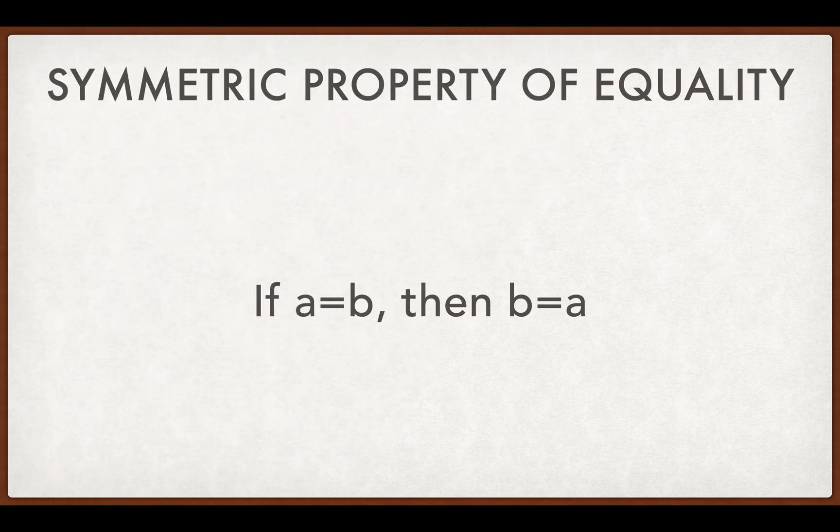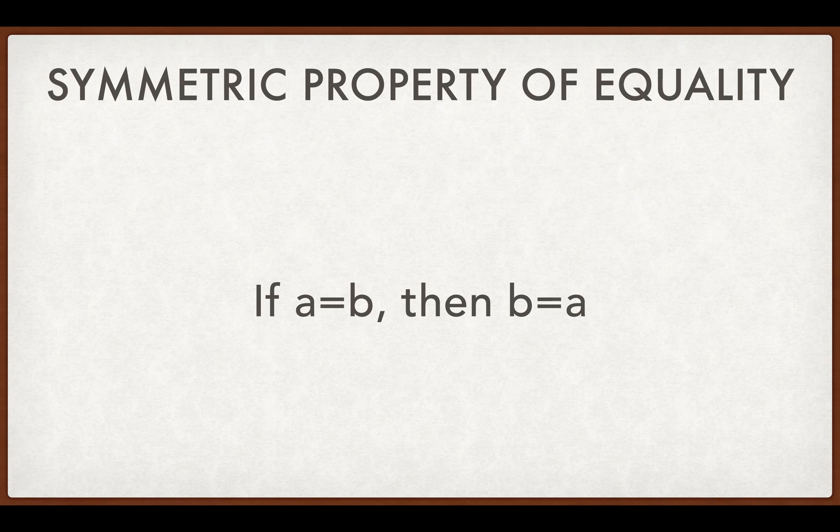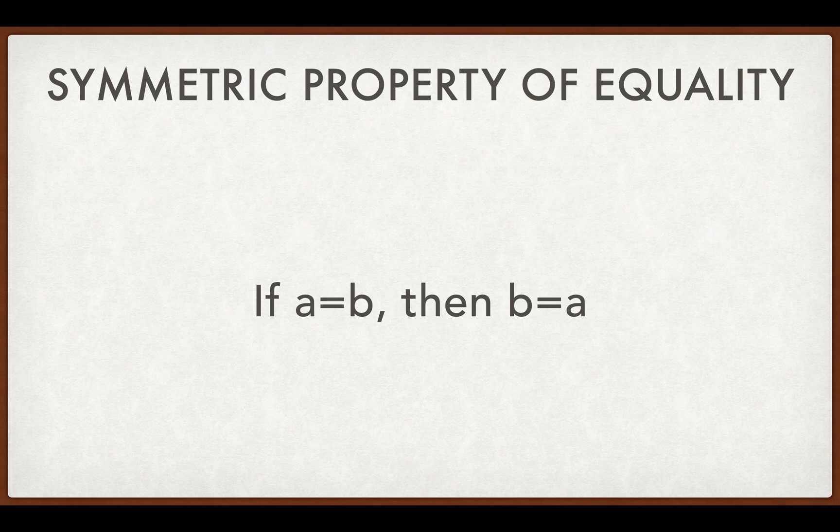Next, the symmetric property of equality. If A is equal to B, then B has to be equal to A. So, if I tell you that a piece of pie is equal to $5, then $5 is equal to the piece of pie.